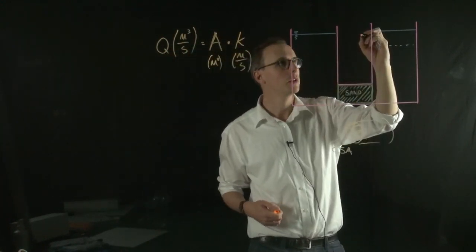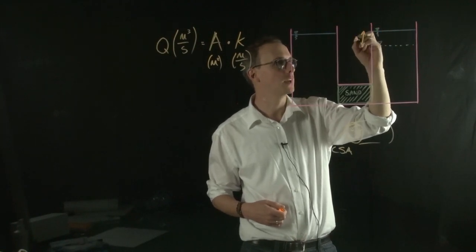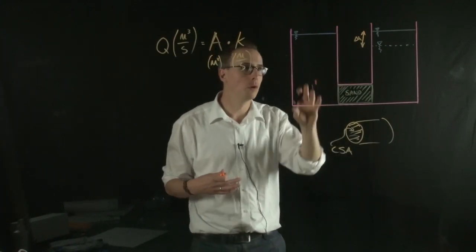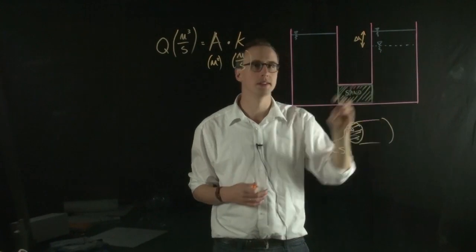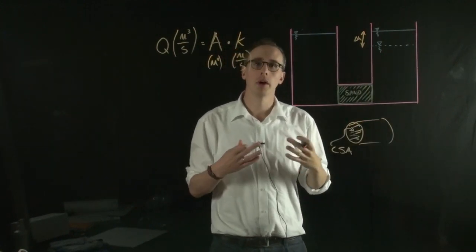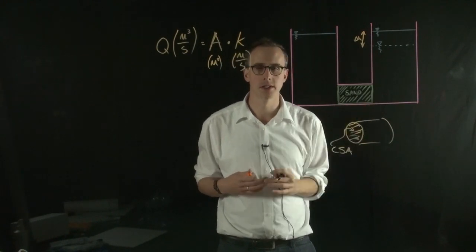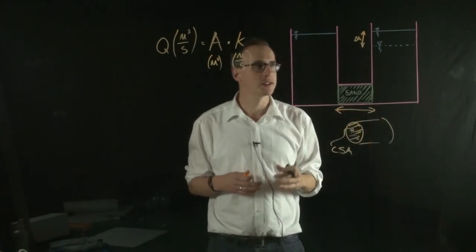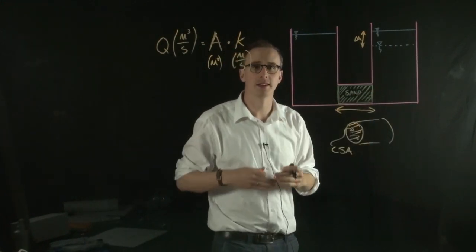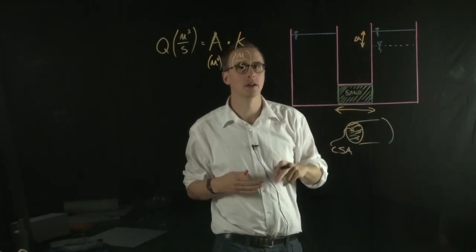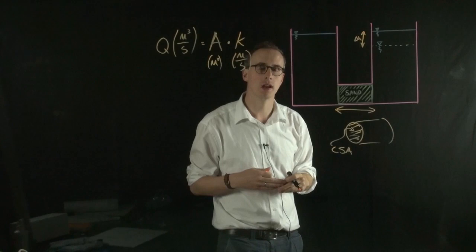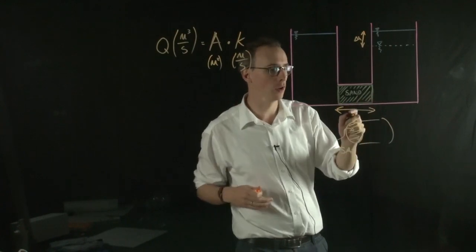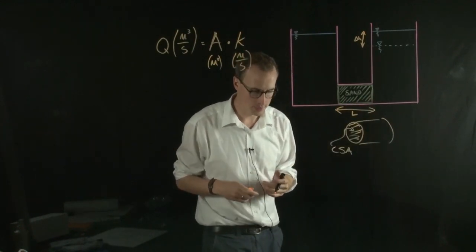And what we're also interested in is knowing the distance at which that delta H is operating in, the length of the flow path. And you can see that if we had a much longer tube of sand here, the pressure difference, the difference in water level, will be spread over a much larger flow path. So this L is really quite important as well.